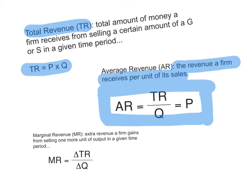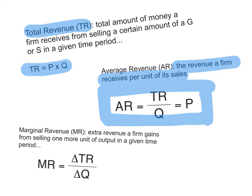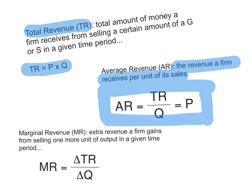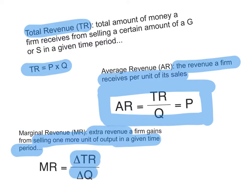Marginal revenue, on the other hand, is the extra revenue a firm gains from selling an extra unit of output in a given time period. It is calculated by dividing the change in total revenue by the change in quantity.